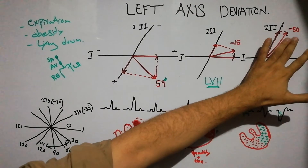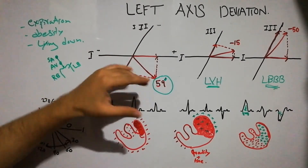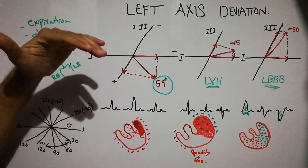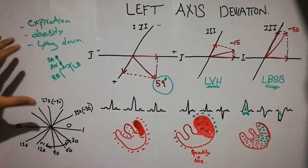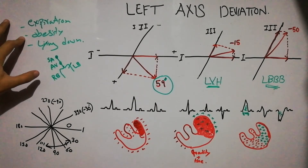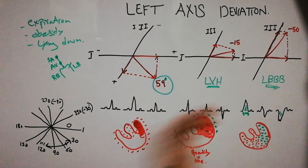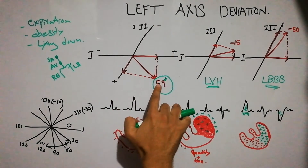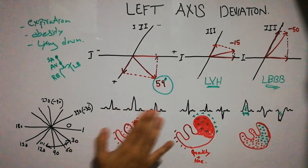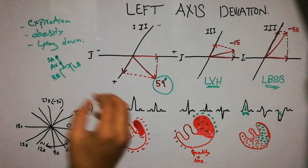In left bundle branch block, the mean vector has turned toward the left side to about minus 50 degrees, compared to the normal value of about 59 degrees. In summary: left axis deviation is the deviation of the mean ventricular QRS vector toward the left. It can be caused temporarily by expiration, obesity, and lying down. In left ventricular hypertrophy the vector shifts to about minus 15 degrees, the ECG changes in leads 1, 2, and 3, and depolarization of the ventricle takes more time on the left side.